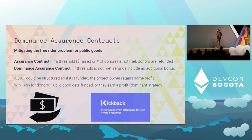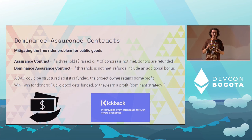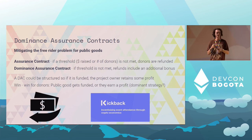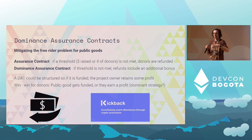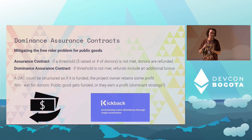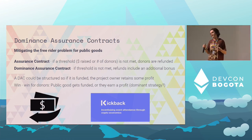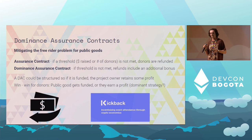Dominance assurance contracts are another mechanism we could use. It's a product of game theory meant to incentivize everyone in the community to contribute to funding a public good and avoid the free rider problem. It offers a refund on your donation if a threshold isn't met — whether that's the amount raised or the number of donors. With dominance assurance contracts, the person offering the public good would actually have to pay you a bonus on top of that refund. It turns into a win-win for donors: either the public good gets funded and everyone's happy, or you earn a profit and it doesn't.